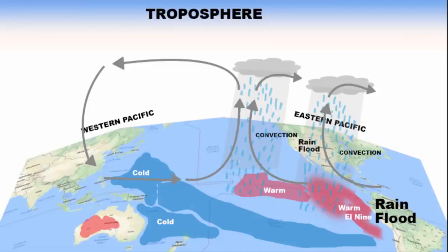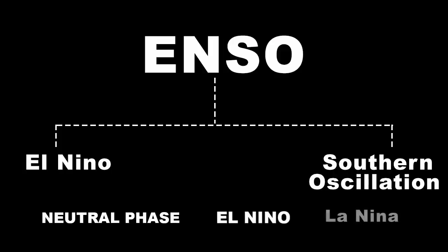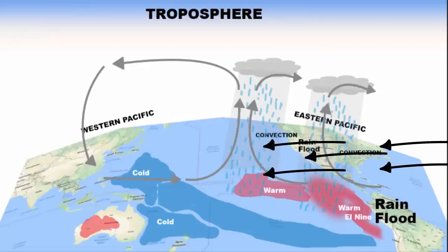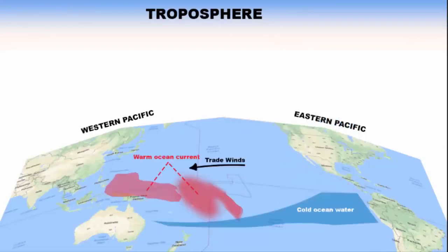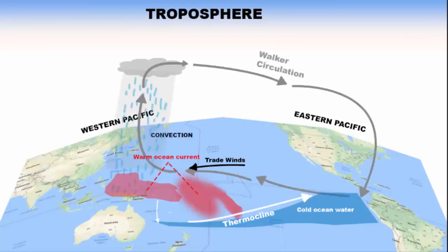Whenever you hear the word El Niño, immediately think of warm ocean current. The third phase is La Niña, which is similar to the neutral phase. In this phase, the trade winds are strong. Since trade winds blow from east to west, they push the warm ocean current from the eastern Pacific towards the western Pacific. Cold water, being dense, settles deep, so when trade winds push the warm surface current westward, cold water from the deep ocean rises up to the surface — this is called thermocline, which is the rising path of water temperature. The rest of the process is the same as the neutral phase.